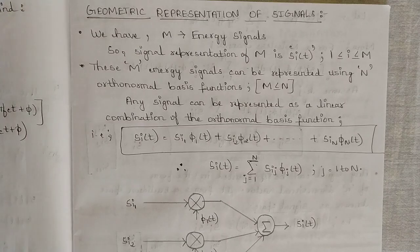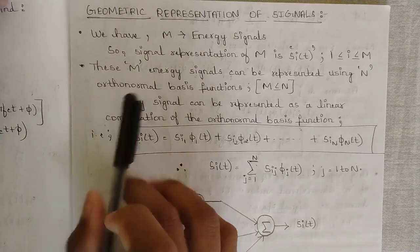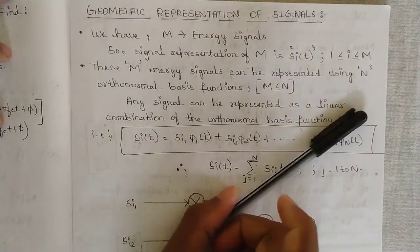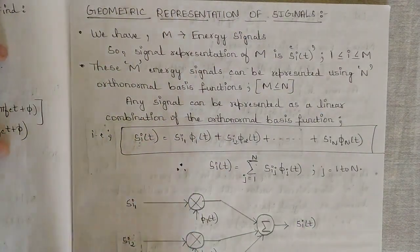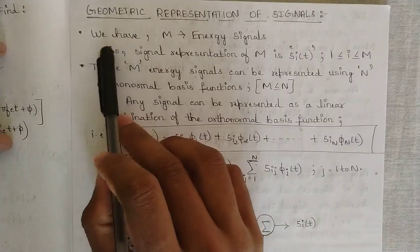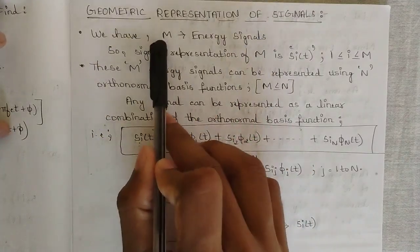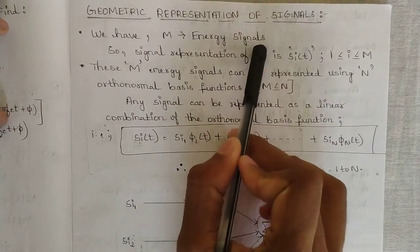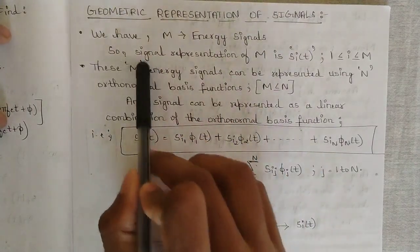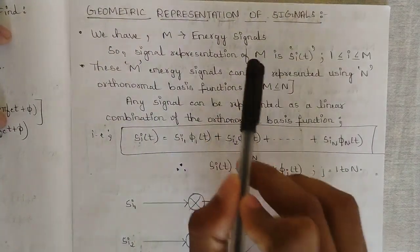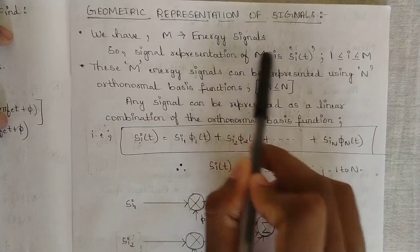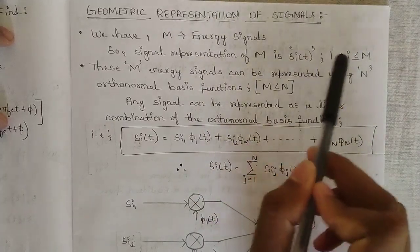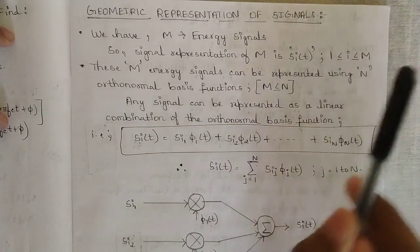This topic is named geometric representation of signals. The M letter suggests the number of energy signals. The signal representation of this set of M energy signals is given by s_I of t, where I ranges from 1 to M.